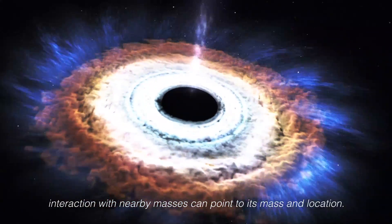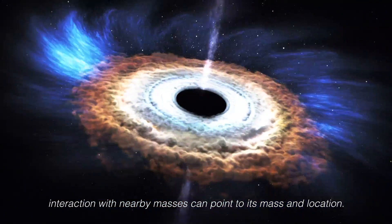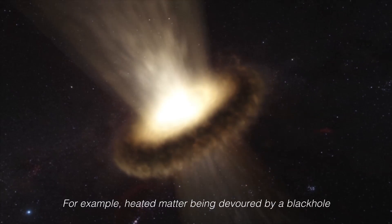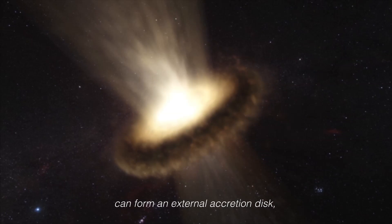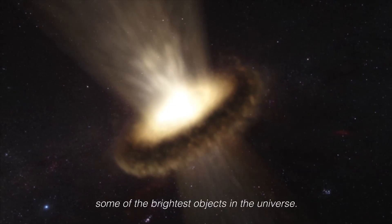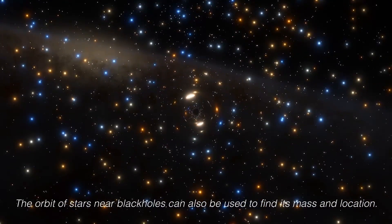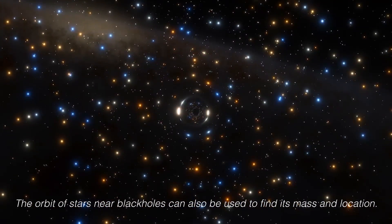For example, heated matter being devoured by a black hole can form an external accretion disk, some of the brightest objects in the universe. The orbit of stars near black holes can also be used to find its mass and location.